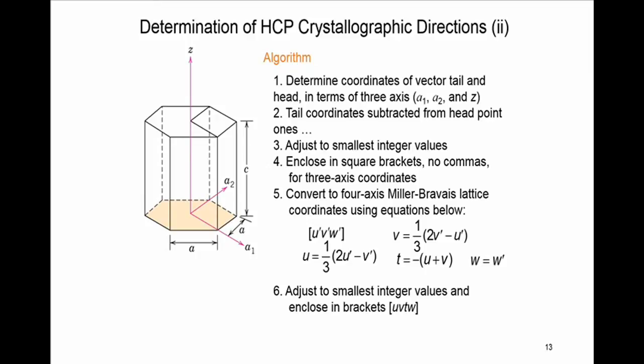First, we determine the coordinates of the vector tail — point 1: x1, y1, and z1 — and the vector head — point 2: x2, y2, and z2 — in terms of the three axes: a1, a2, and z.